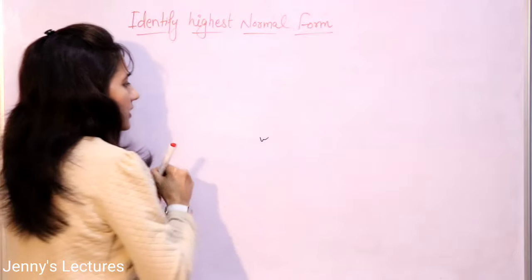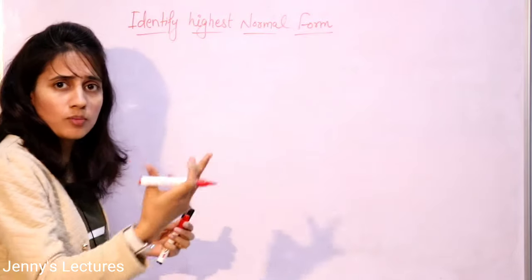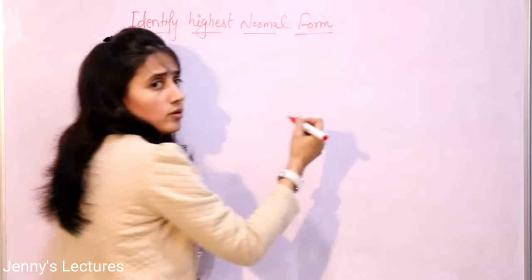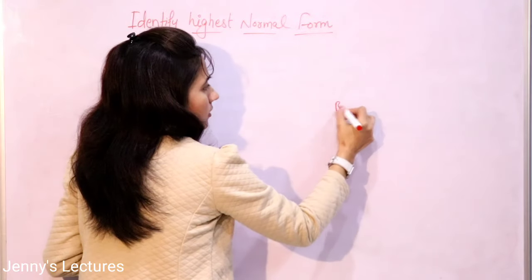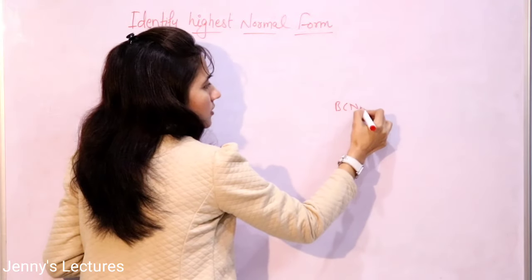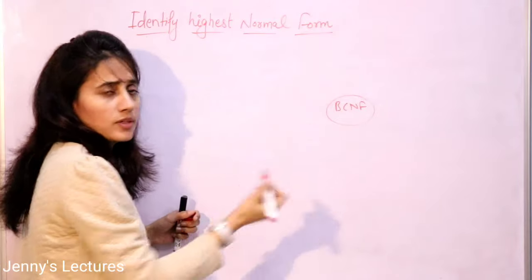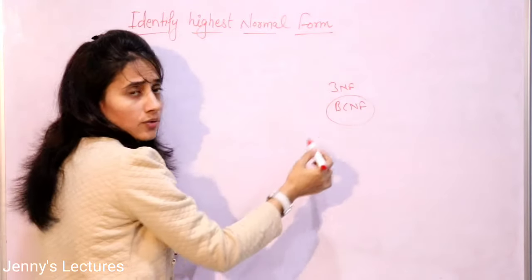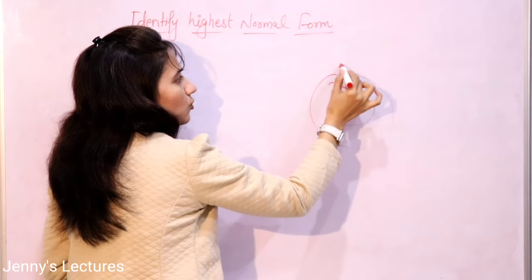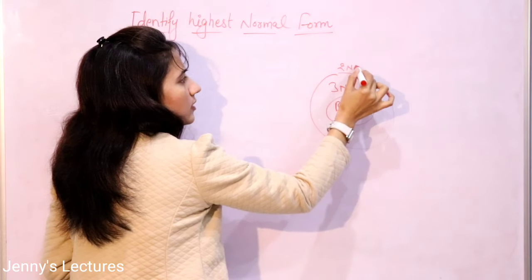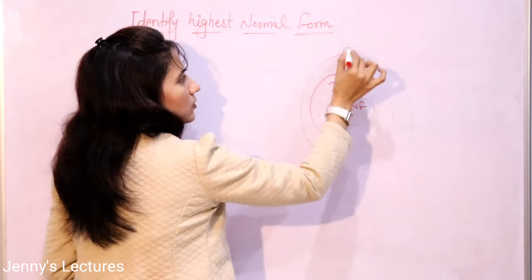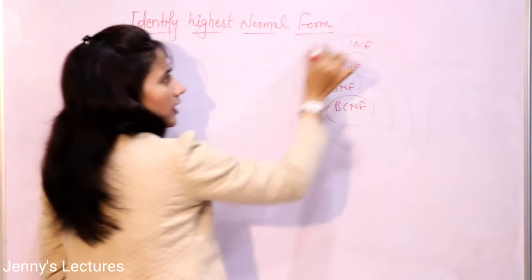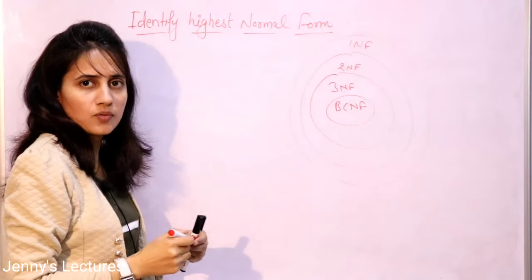Let us quickly revise those normal forms. We can draw them in a Venn diagram like this: BCNF is more strict than 3NF, 3NF is more strict than 2NF, and 2NF is more strict than 1st NF.